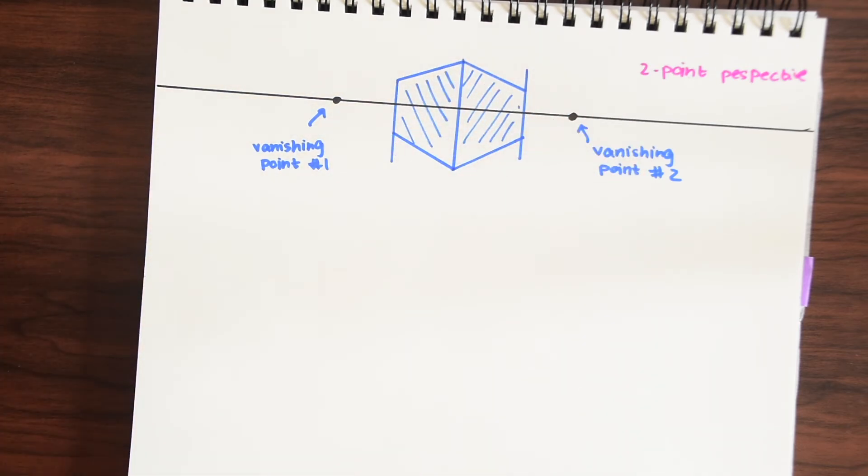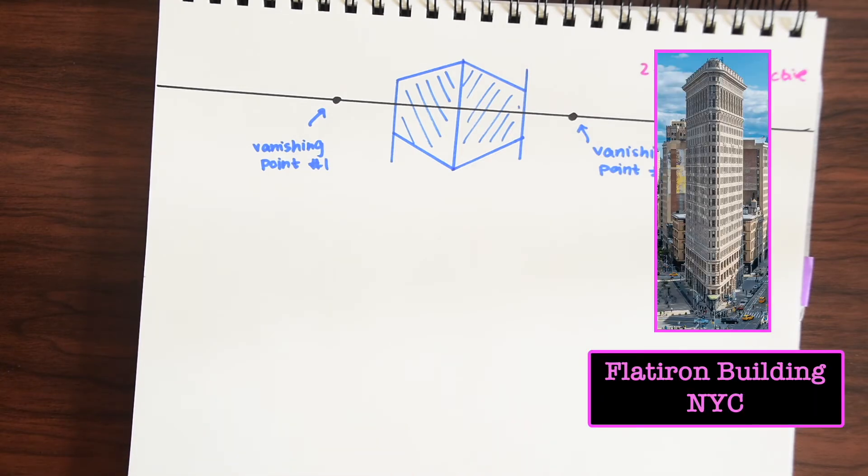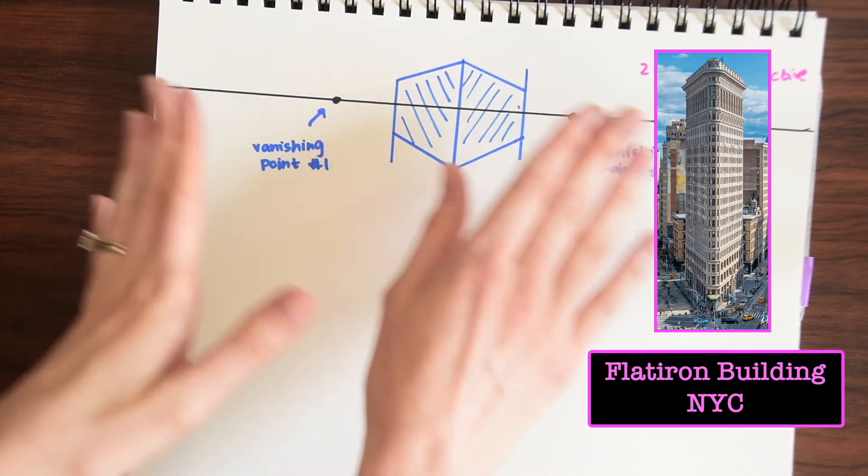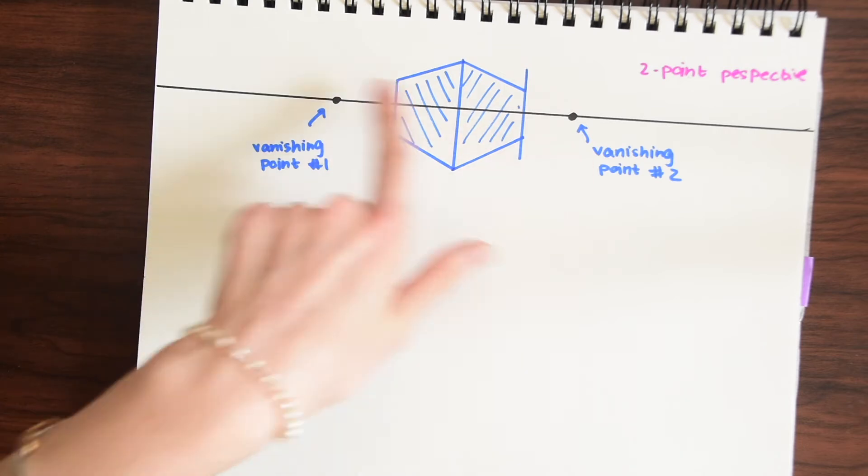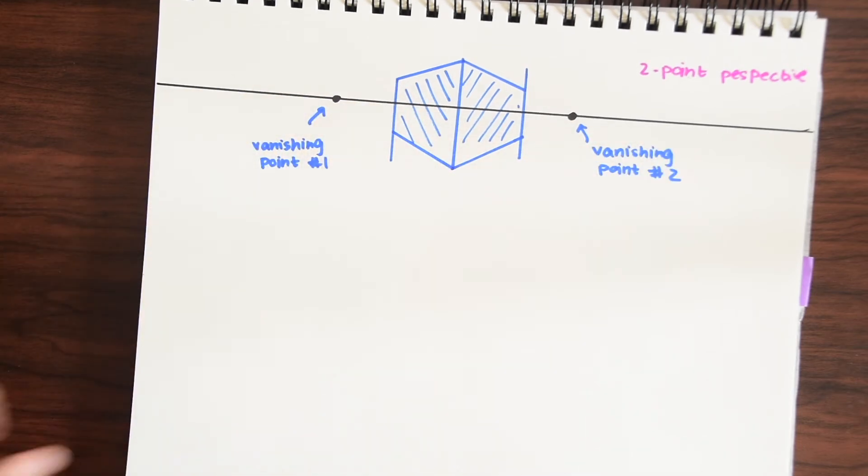So I always like to think of like we have a box and we're looking at it at a diagonal or if anyone knows the flat iron building in New York City it's a very narrow kind of building and you see it head on like this with its corner. We have these two vanishing points this time and this is our horizon line again.